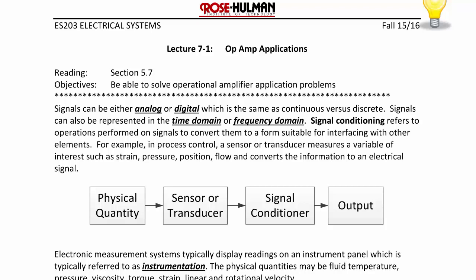Signal conditioning refers to operations performed on signals to convert them to a form suitable for interfacing with other elements. For example, in process control, a sensor or transducer measures a variable of interest such as strain, pressure, position, or flow, and converts the information to an electrical signal. This diagram represents signal conditioning: taking a physical quantity, measuring it with a sensor or transducer, sending it through a conditioner, and making it suitable for output to interface with another element.